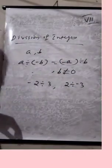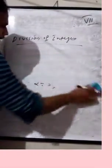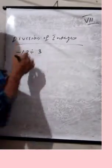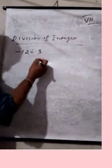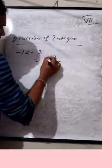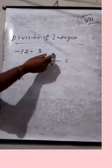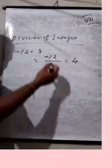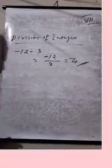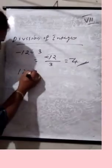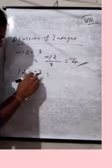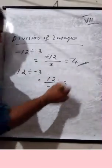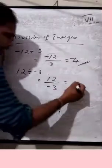I hope you understood. Next: minus 12 divided by 3. What is the result? It is minus 4. And 12 divided by minus 3: 12 by 3 is 4, so 12 divided by minus 3 equals minus 4.